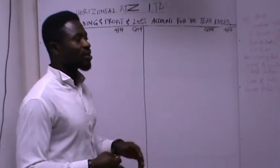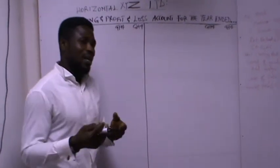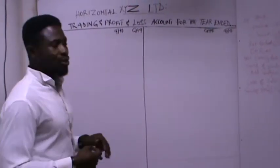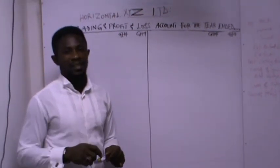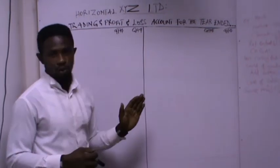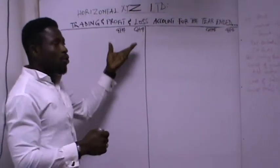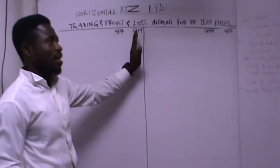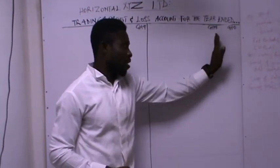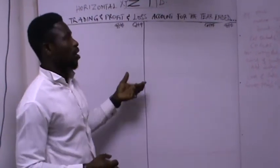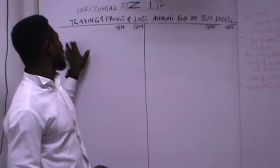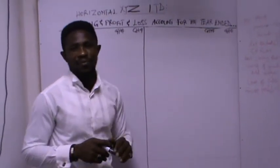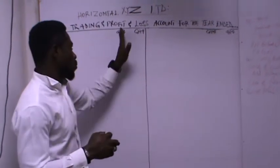Without wasting time, we are going to look at what information you need to prepare the trading account. We have two columns: an inner column and an outer column. When there is no adjustment to be made on an entry, you record it in the inner column. If you have any adjustment to make on an entry, you put it in the outer column.